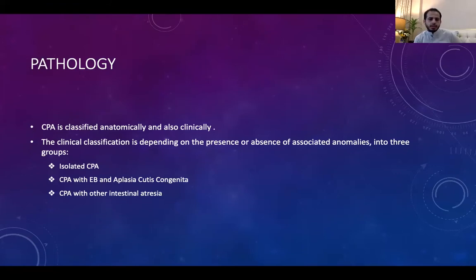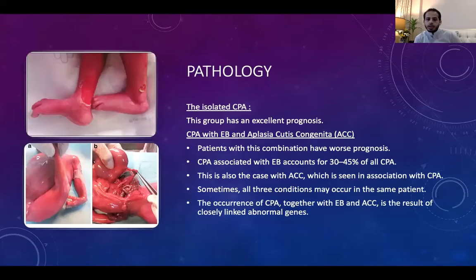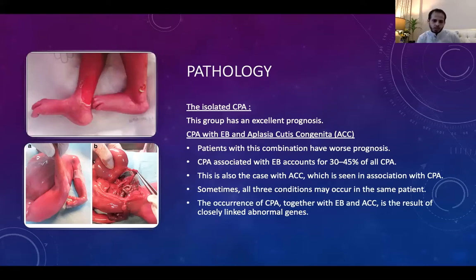Pyloric atresia can be classified anatomically or clinically. Clinical classification includes isolated, associated with epidermolysis bullosa, associated with hereditary acroosteolysis, or associated with intestinal atresia. If isolated, it has excellent outcome and good prognosis. Once associated with other congenital anomalies, prognosis worsens significantly. Hereditary multiple intestinal atresia is very rare with autosomal recessive inheritance, requiring genetic counseling for the child and parents.